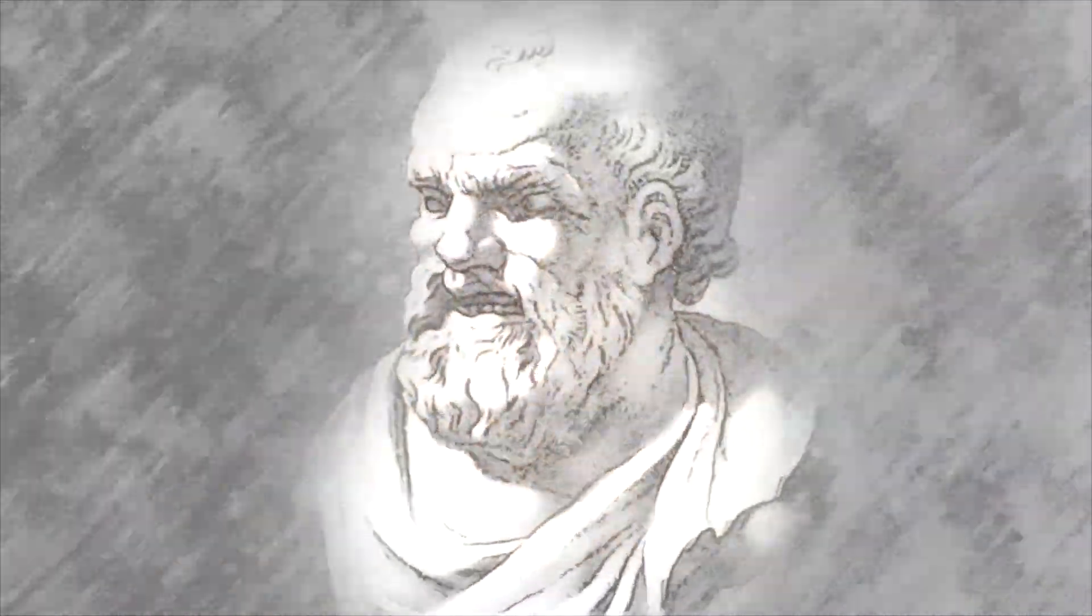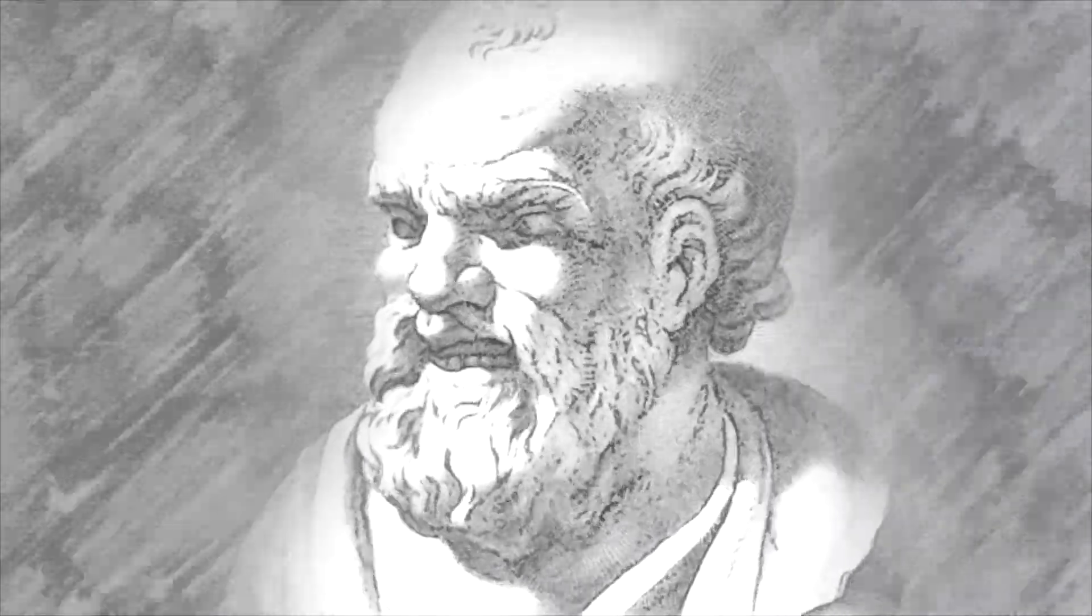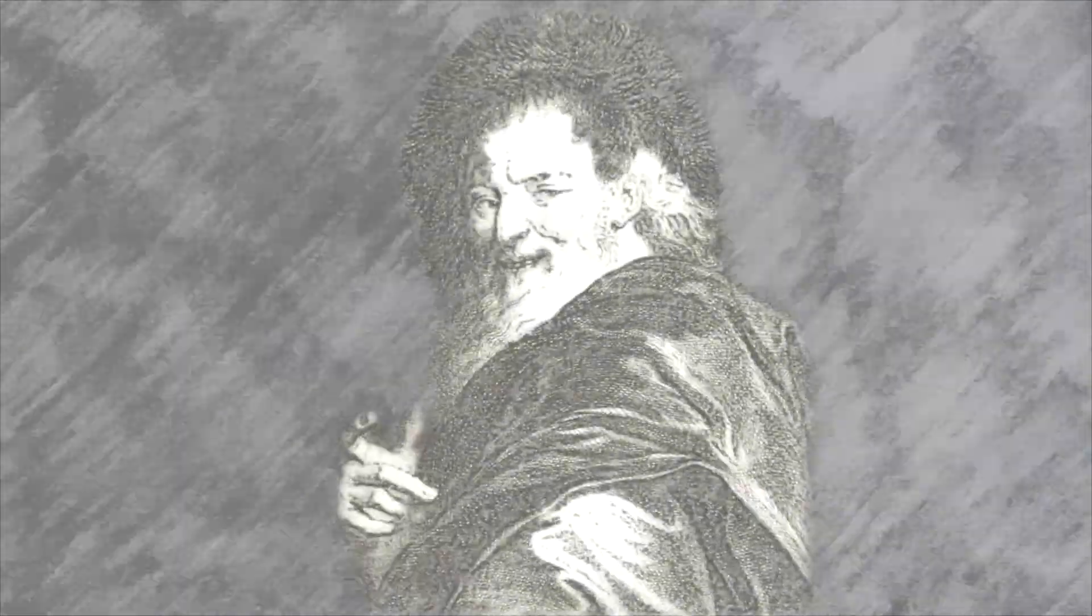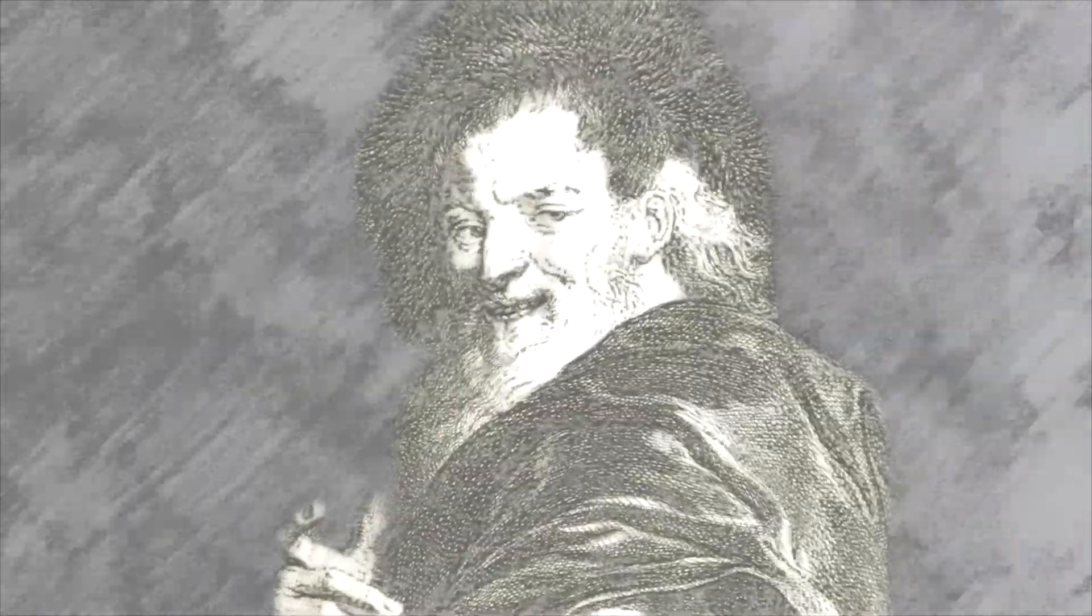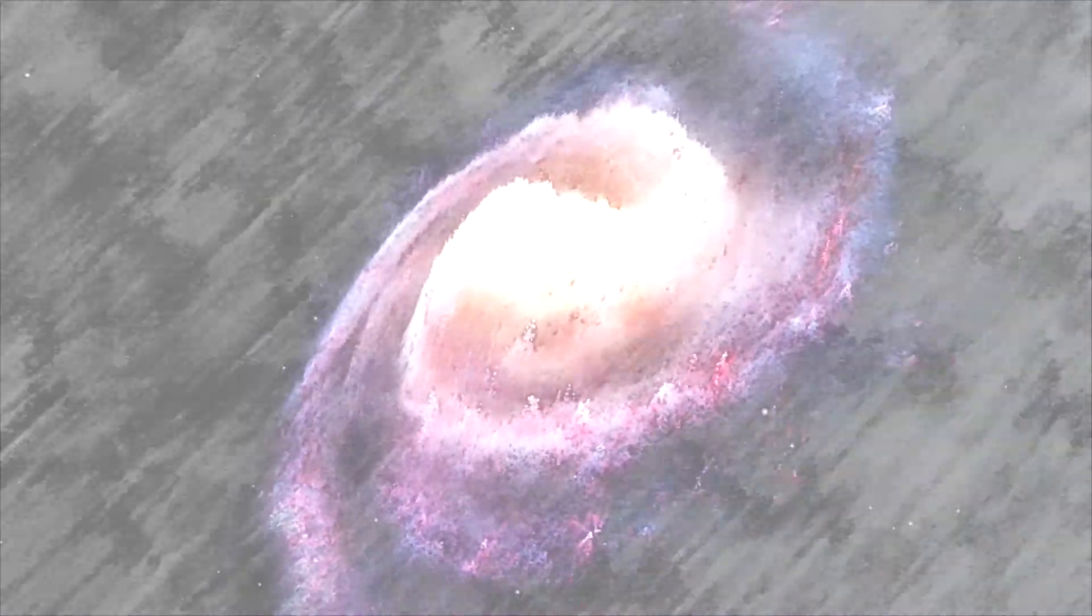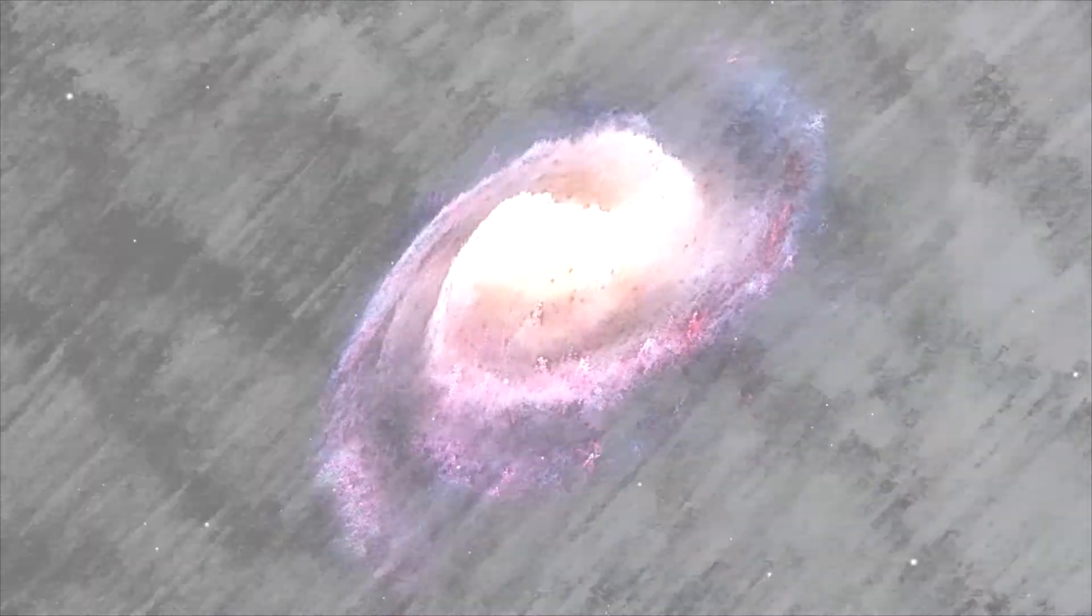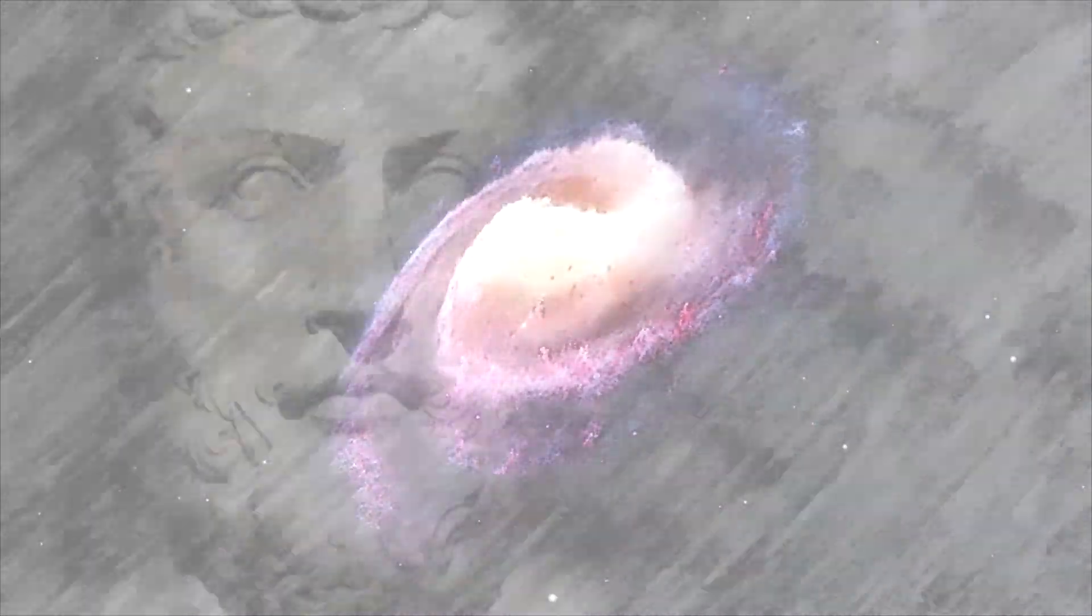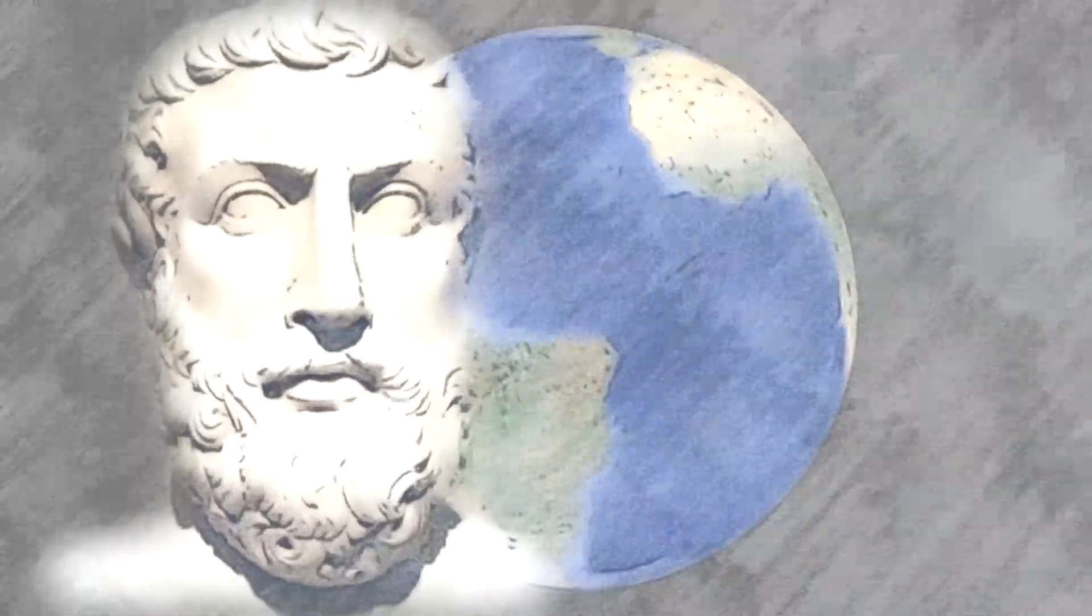Known as the laughing philosopher because of the importance he placed on cheerfulness, Democritus was the first philosopher to posit that what we refer to as the Milky Way was the light of stars reaching our perception, and that the universe may in fact be a multiverse with our planet sustaining life.